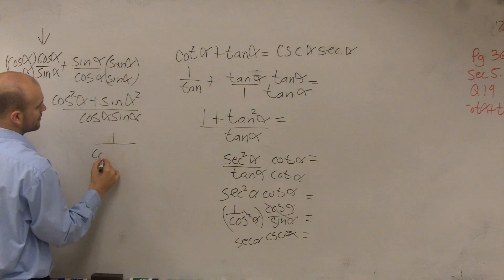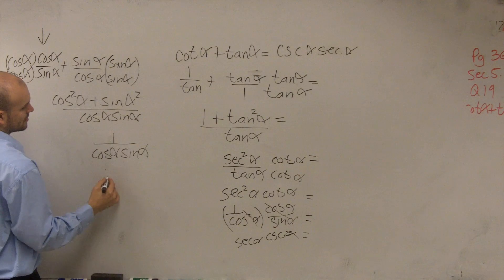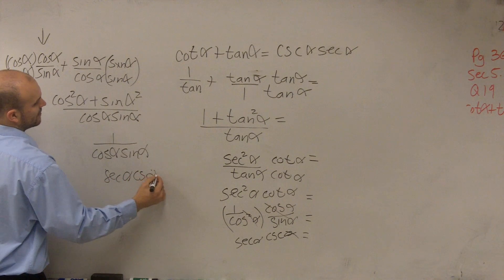Well, on the top, that goes to 1 over cosine of alpha, sine of alpha, which is secant of alpha times cosecant of alpha.